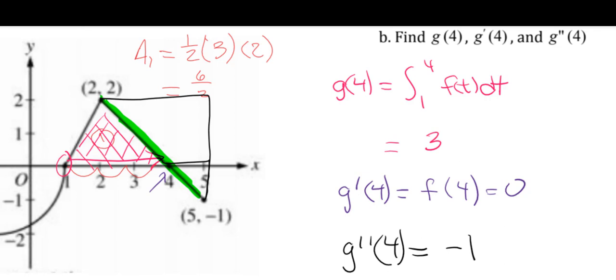So that's all you need to do for g double prime of 4 is just find the slope of that function where x equals 4. Not too bad.